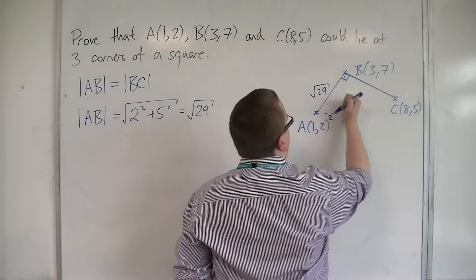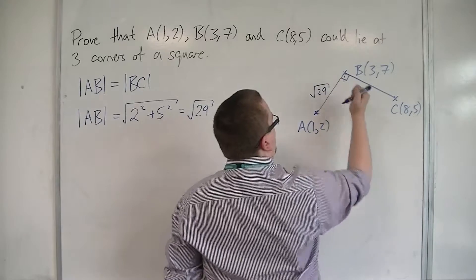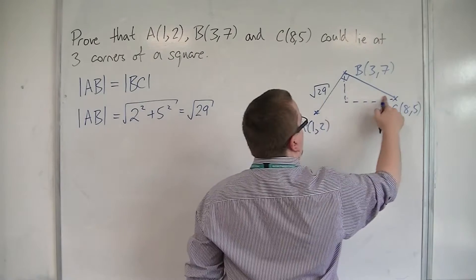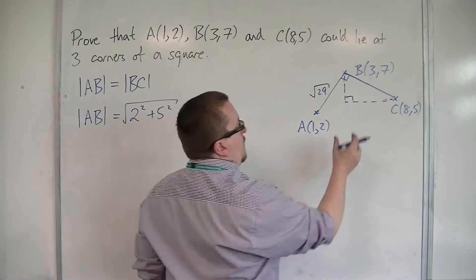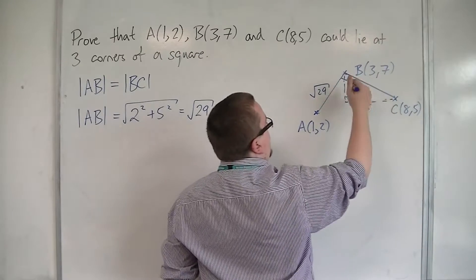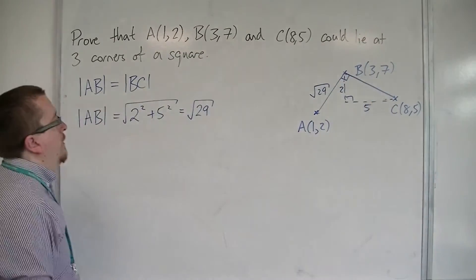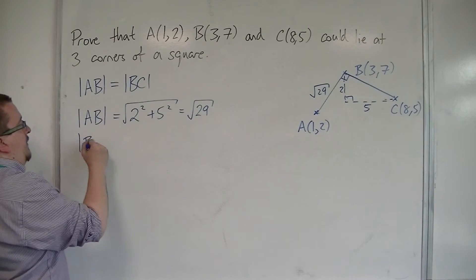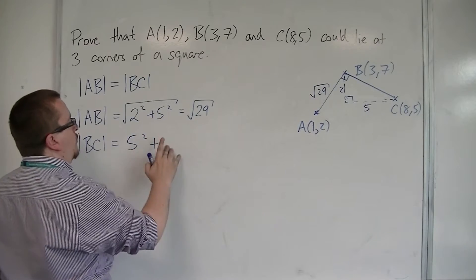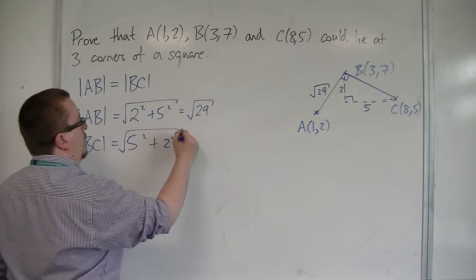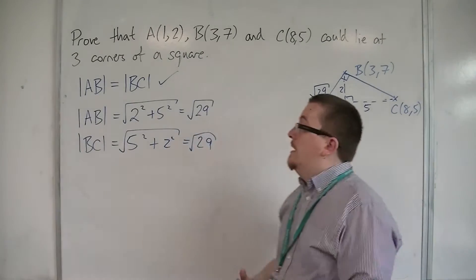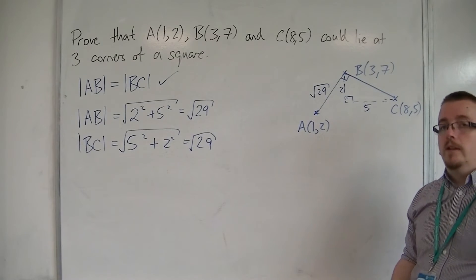Now, let's consider the other two points, so B and C. So, B is 3 to 8, so that's 5, and then from 5 to 7, that's 2. And so, BC, the length of BC, is 5 squared plus 2 squared, square rooted, which is root 29. And so, the length of AB is the same as the length of BC, so that's done.